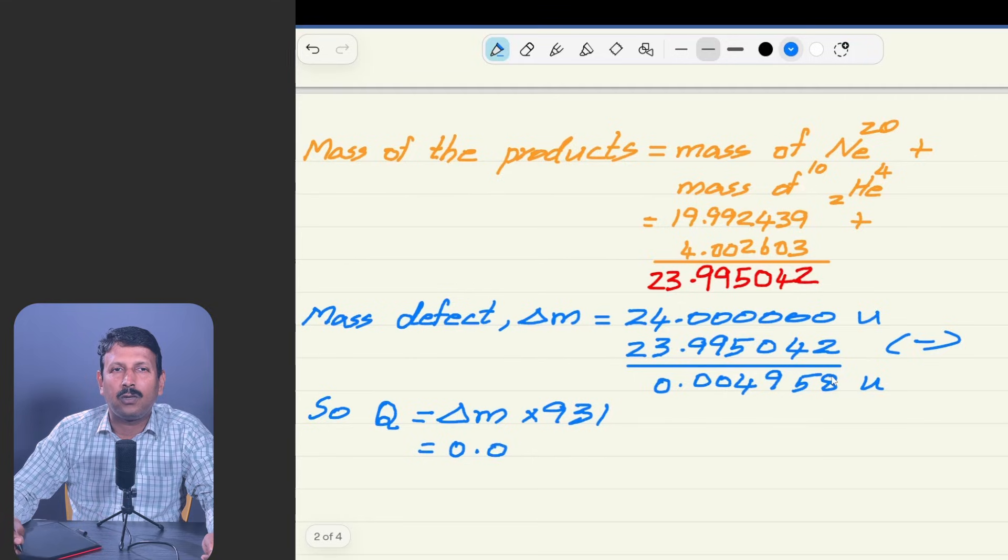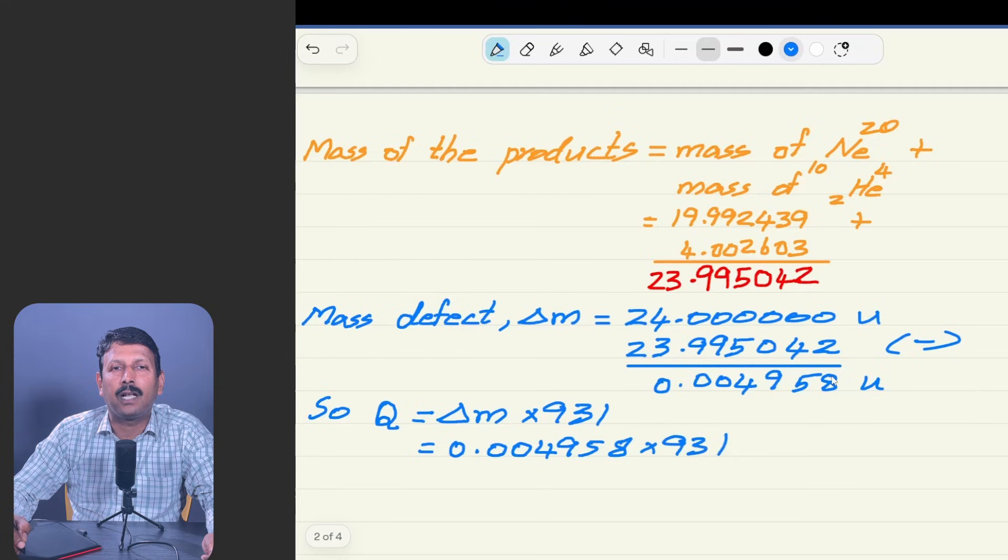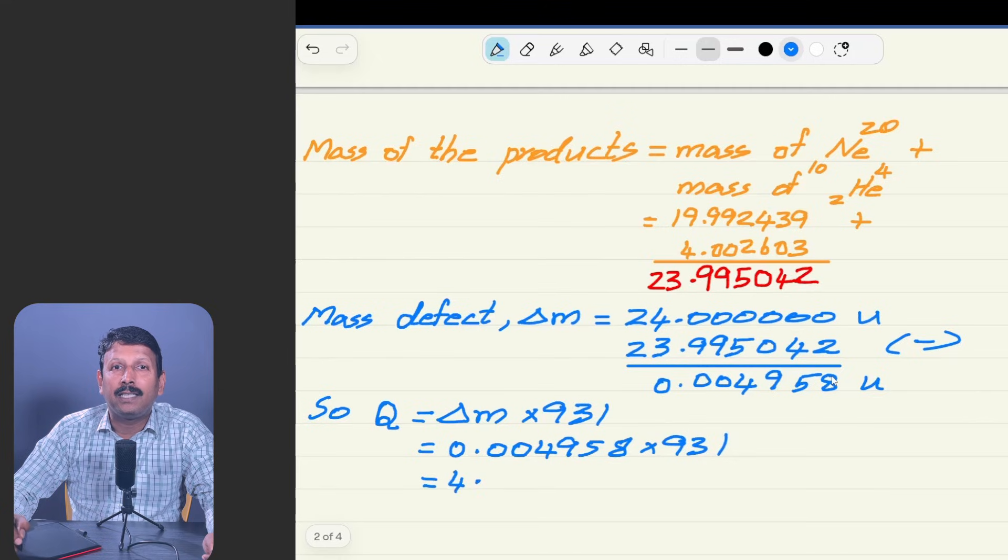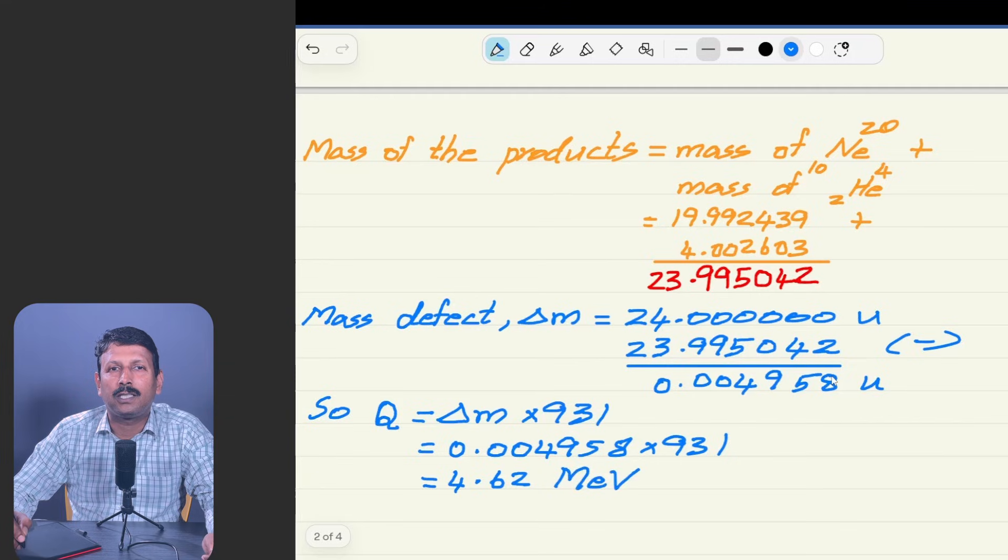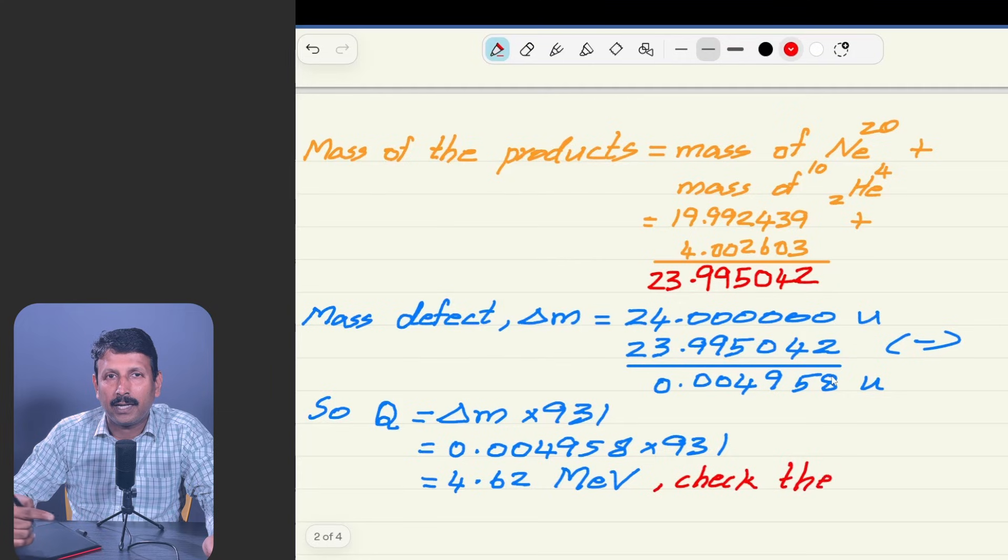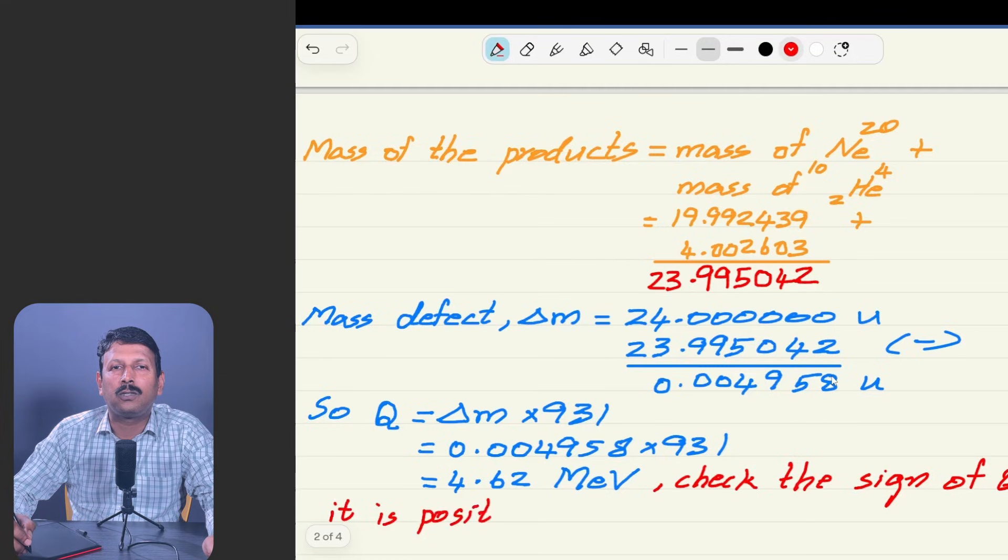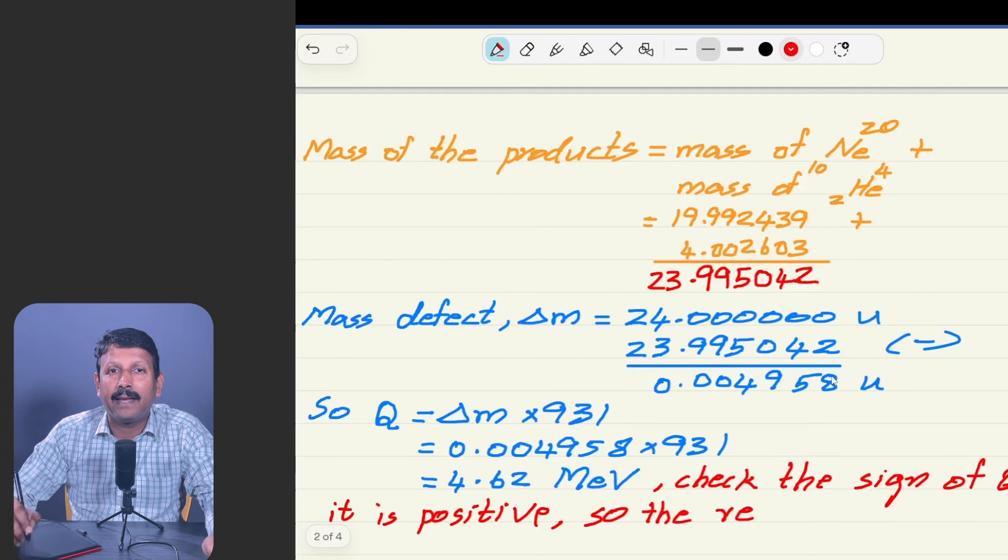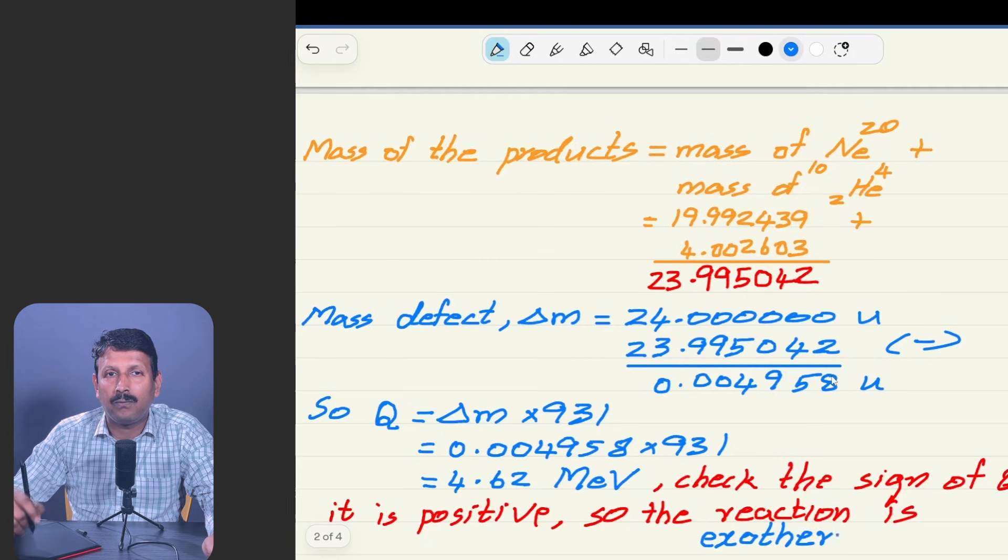Now the energy calculation using Einstein's mass-energy relation E = mc². Here the M is ΔM what we calculated times 931. Q calculation done, 931 to convert. So, the final answer is 4.62 MeV. Check the sign of the answer. If the answer is positive it is an exothermic process, heat releasing. And if it is negative it will be an endothermic process. As per the answer what we got, this is a positive number. So, the reaction is exothermic.